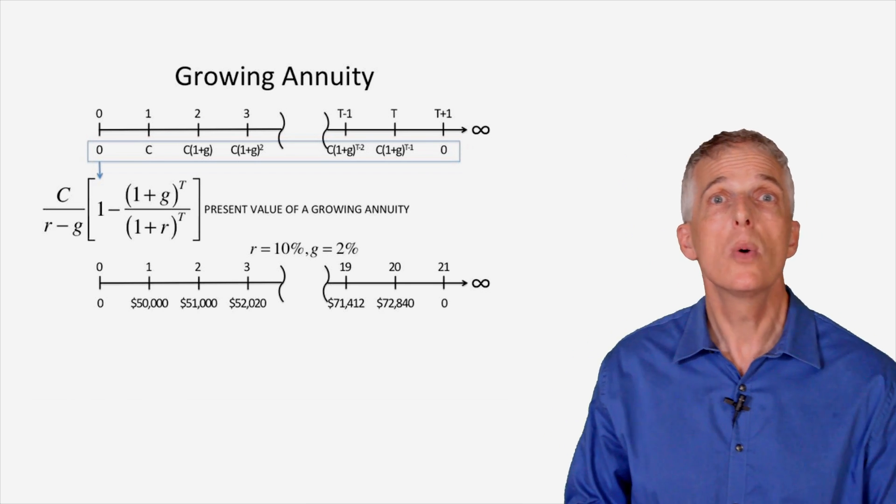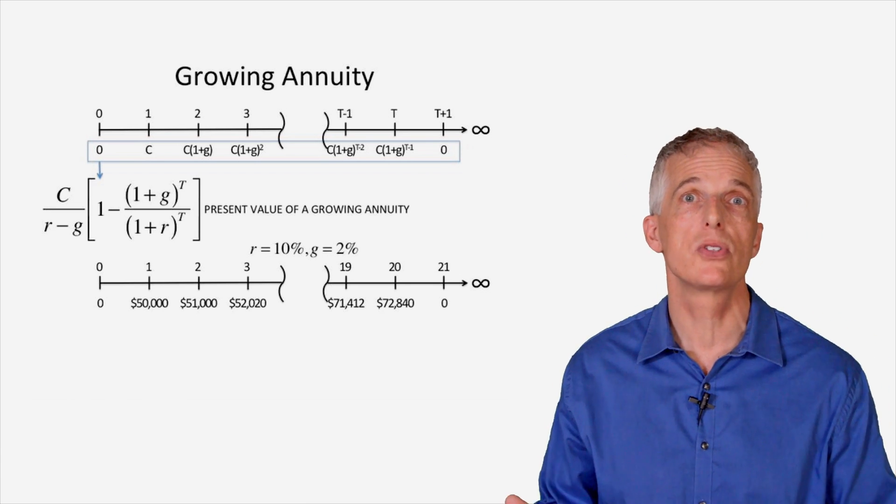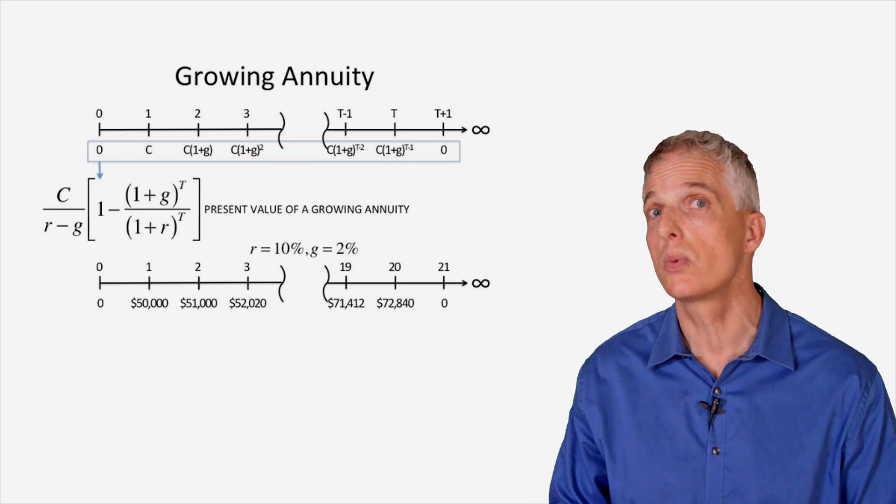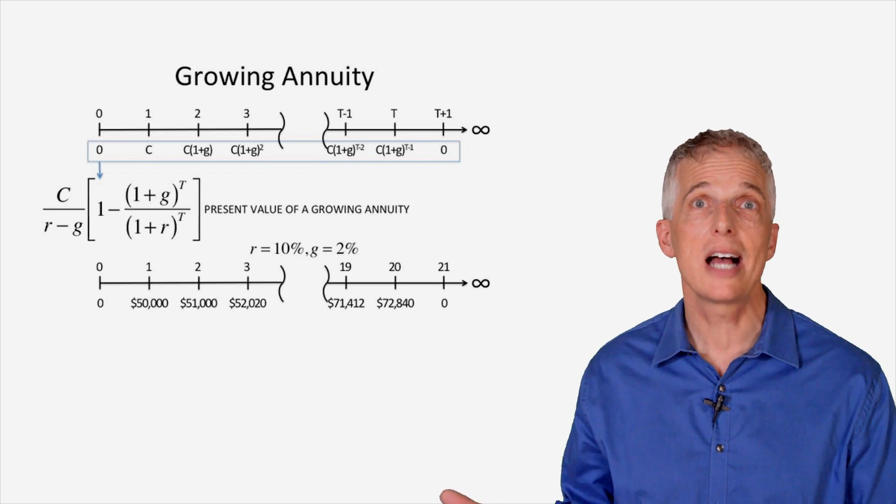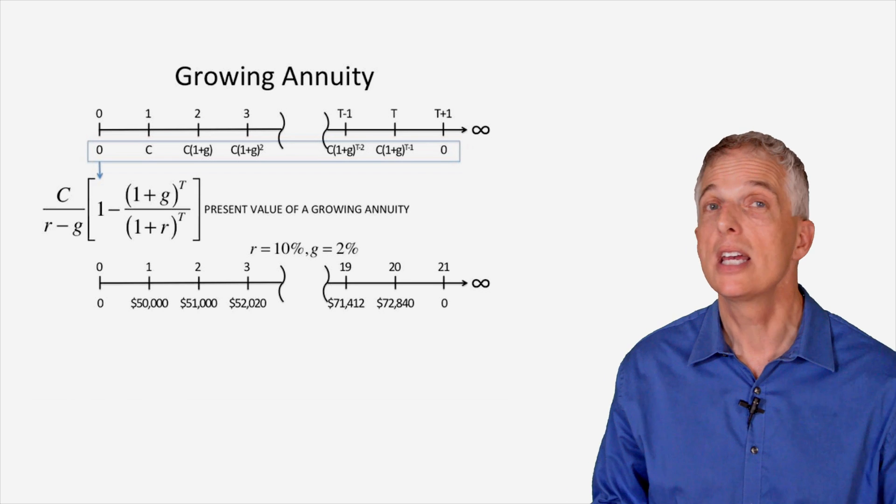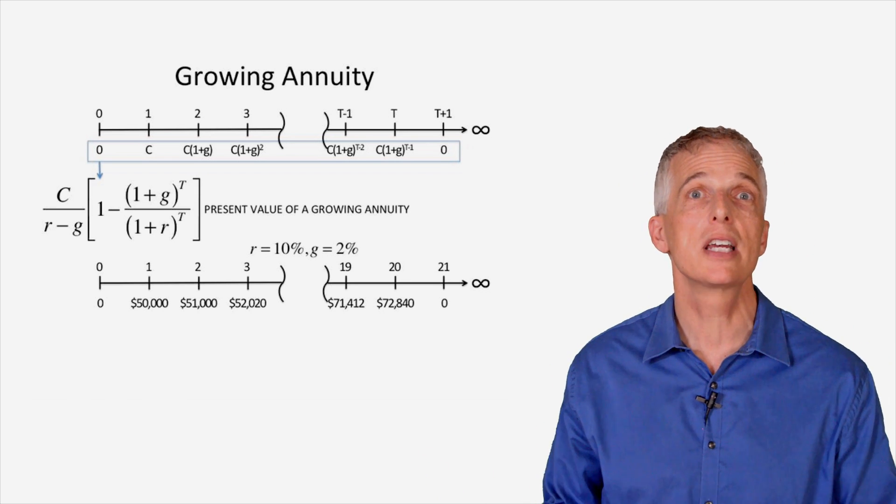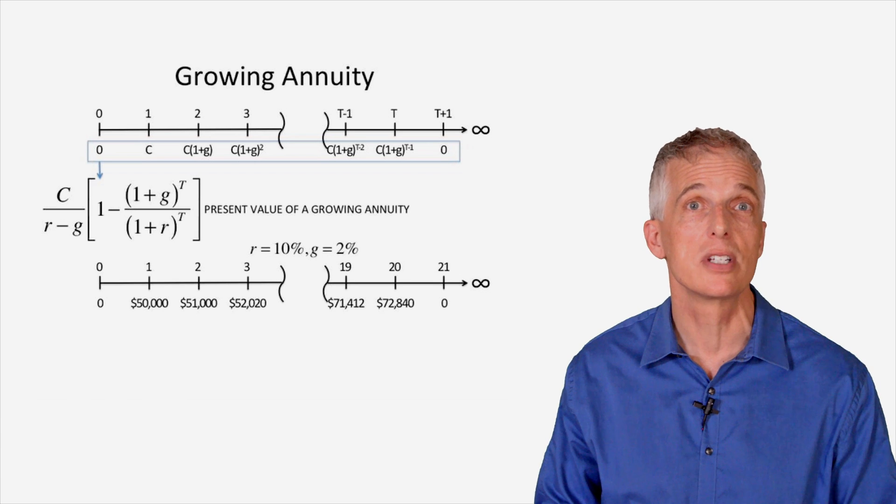In the third year, we enjoy compound growth of 2% over two periods and receive a payment of $52,020, while our last promised payment in year 20 enjoys 19 years of compound growth at 2%, resulting in a cash payment of $72,840.